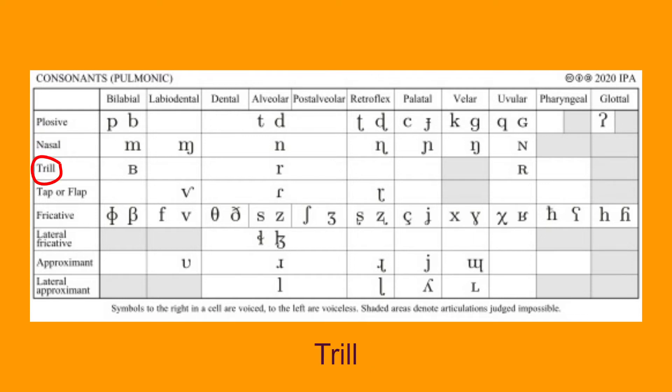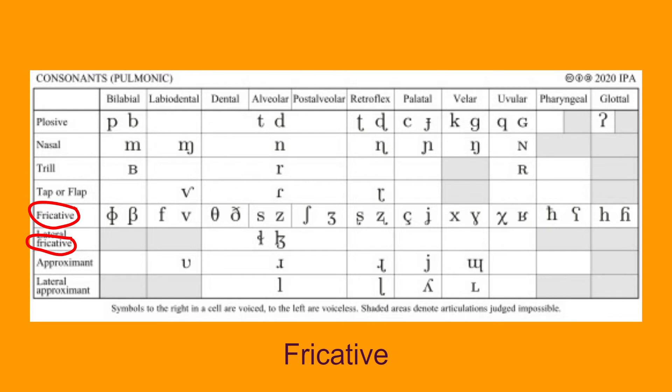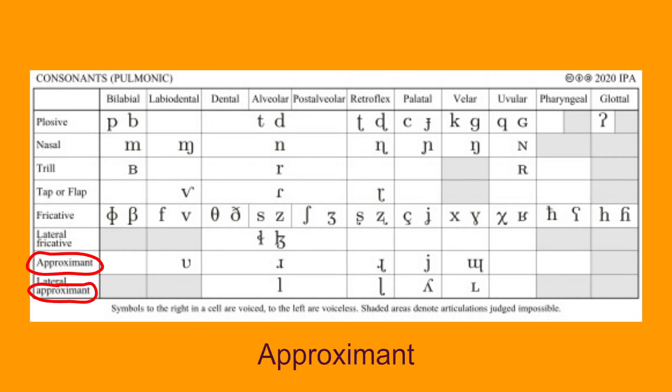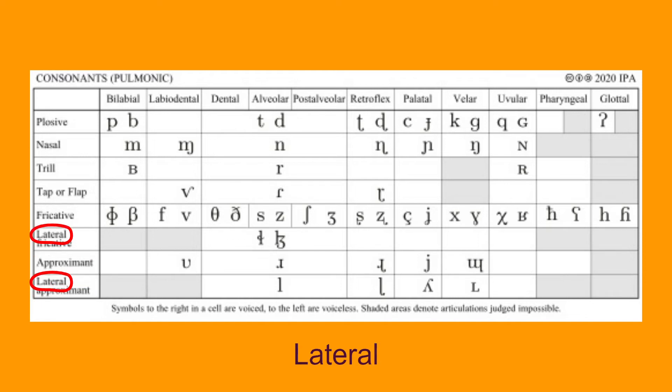Trill, which refers to throwing one articulator against another one multiple times, like a vibration. Tap or flap, which refers to throwing one articulator against another one only once. Fricative, which refers to forcing air through a narrow channel formed by two articulators. Approximant, which refers to forcing air through a less narrow channel formed by two articulators. And lateral, which refers to air traveling alongside the tongue.